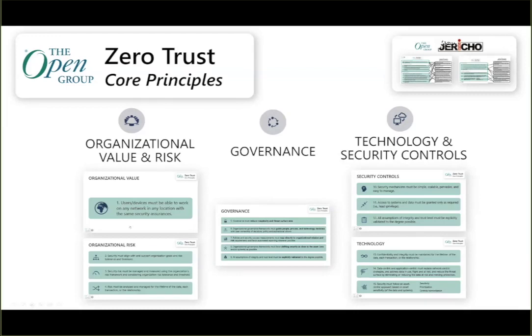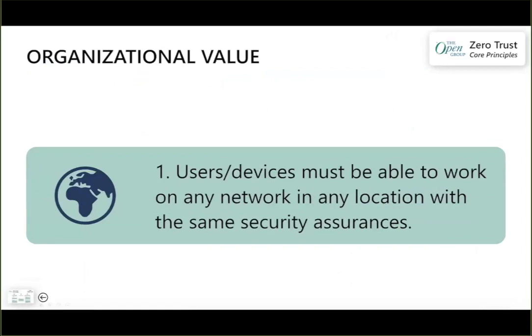The first category is organizational value. This is the business driver for Zero Trust — in order for security to enable the business, getting out of the way so that users and devices can do what they do naturally, work where they need to work, where end users feel creative and able to meet with business partners and customers without being burdened by security pain and inconvenience. Working in any network, any location, with the same security assurances is the goal — though context matters, like when someone drops into a country they've never been to before.